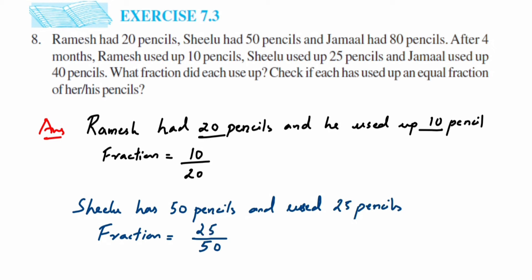We can cancel here 25 and 50. This goes in 25 table: 25 ones and 25 twos are 50, so fraction is 1 upon 2. I'm going to cancel 10 and 20 here. It's 10 ones and 10 twos are 20.